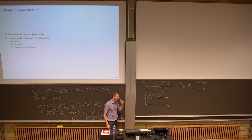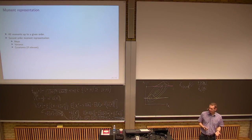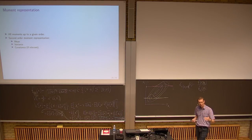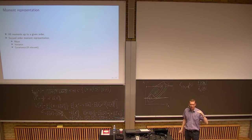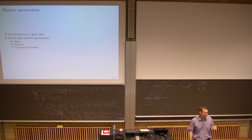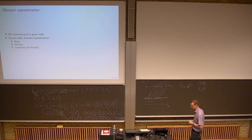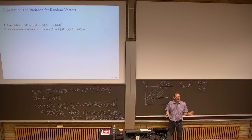One of the exercises today asks for a second-order moment representation. That means not just finding the second-order moment, but finding everything up to the second order. We'll generally stick to normally distributed variables, meaning we won't go above the second-order moment. So we need the mean, the variance, and the covariance.